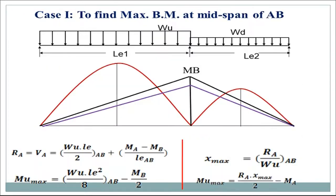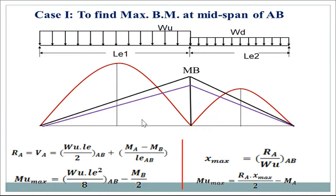Now for the different cases, consider two spans AB and BC, where LE1 is one span and LE2 is another span. The bending moment diagram shows WL²/8 for span 1 and WL²/8 for span 2, and MB is the bending moment at the continuous support. This can be determined by either the three-moment theorem or moment distribution method or any other convenient method. This is the standard case when we consider maximum load on a continuous beam.